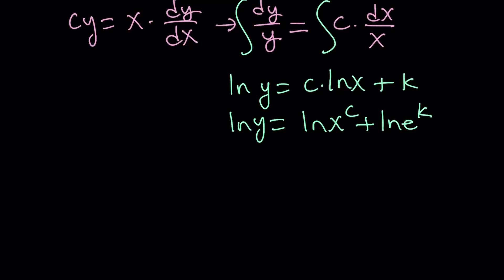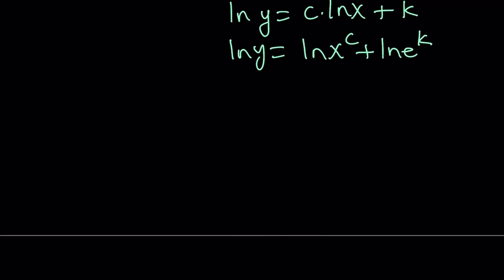If I put these two together, I can write this as ln y equals ln x to the power c plus ln e to the power k. I can replace k with ln e to the power k. Now we can put these two ln together.